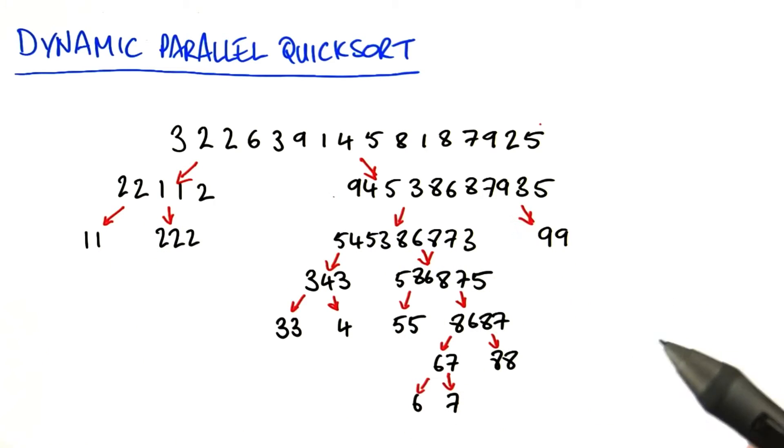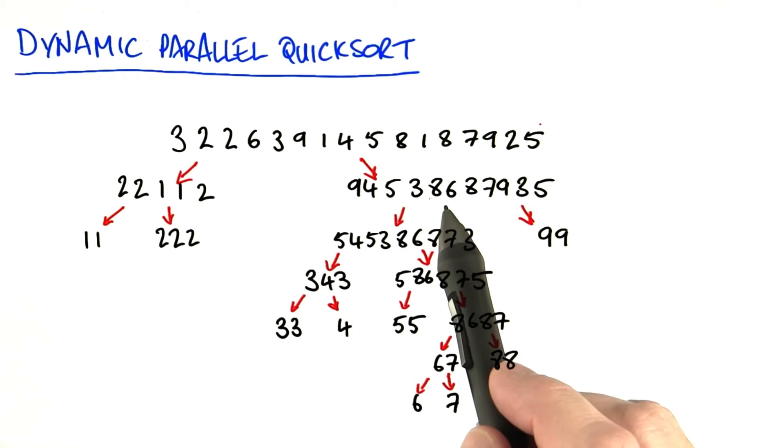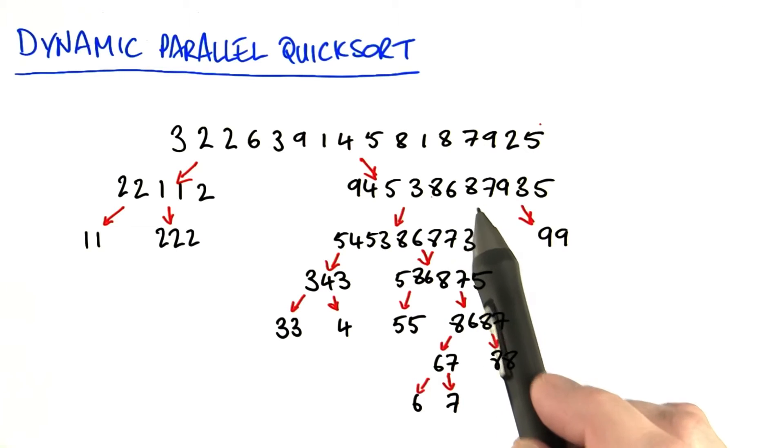It would already have all the information it needs to decide whether to launch and how many threads to use, because it's just done the partitioning. So it doesn't have to communicate this back to the CPU. That's the first problem taken care of.